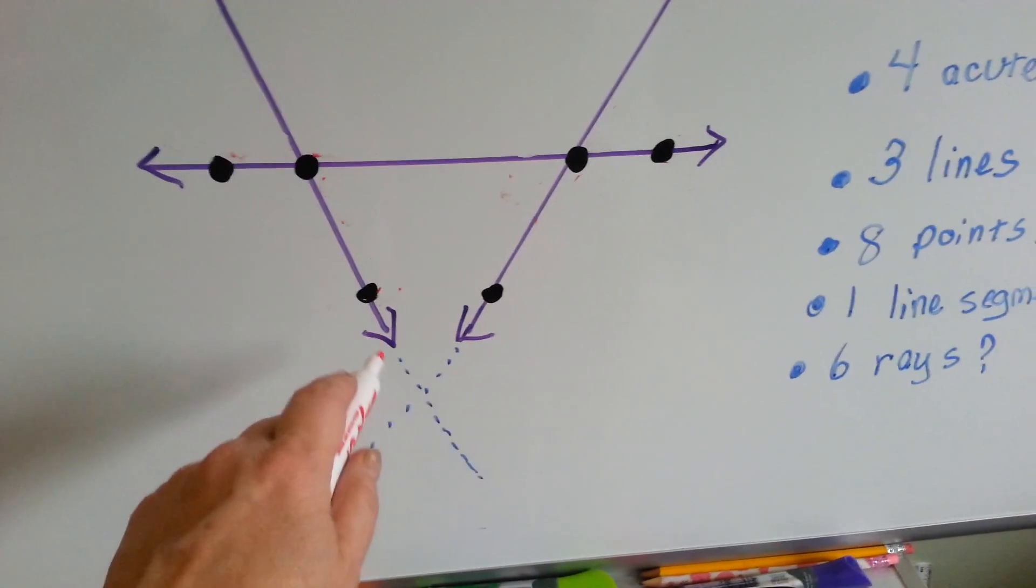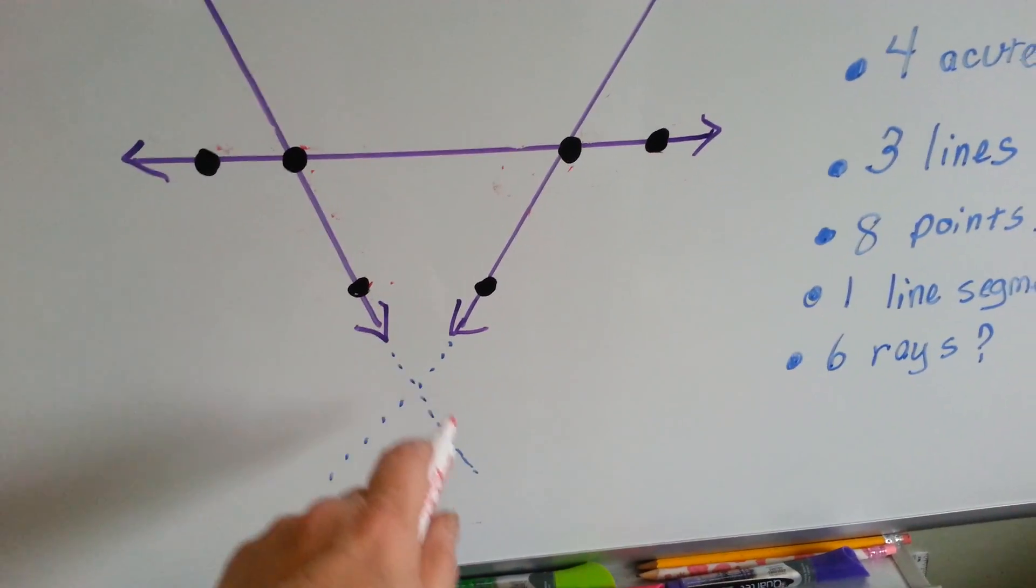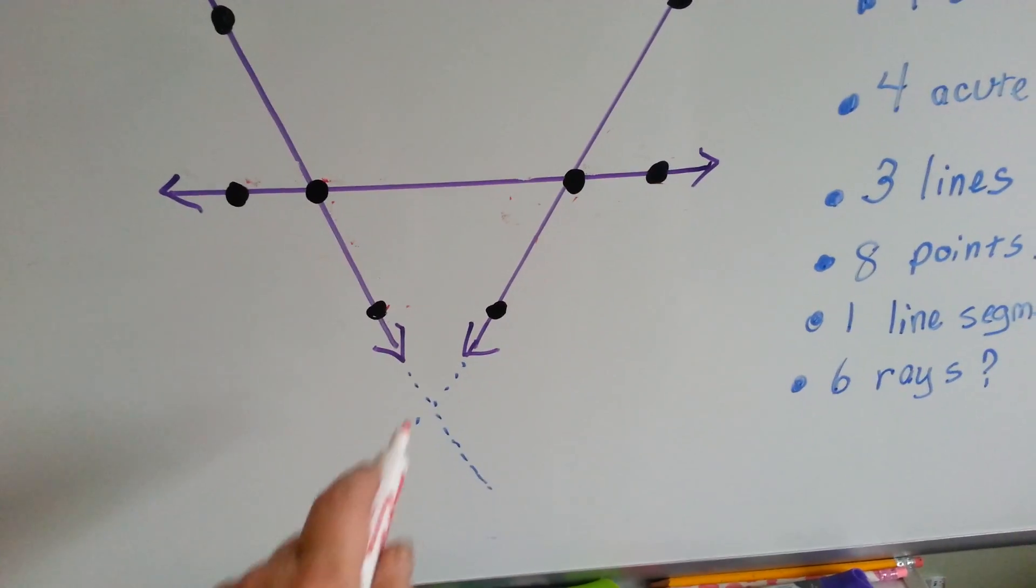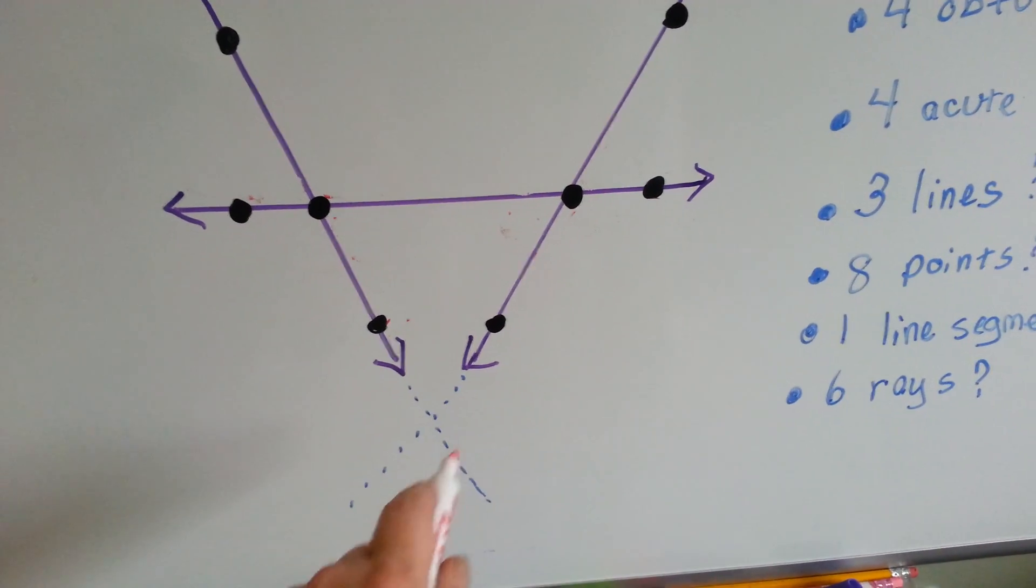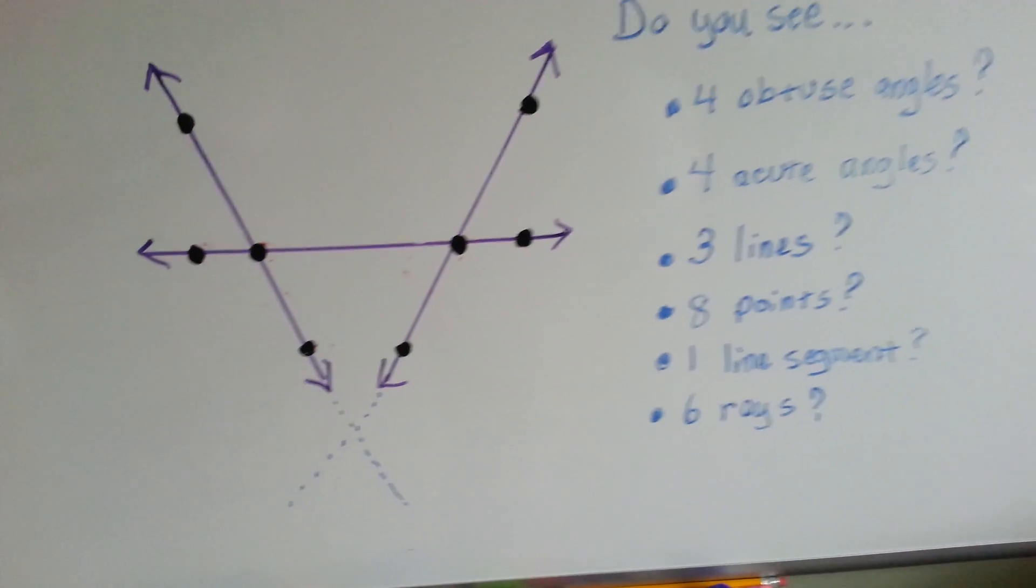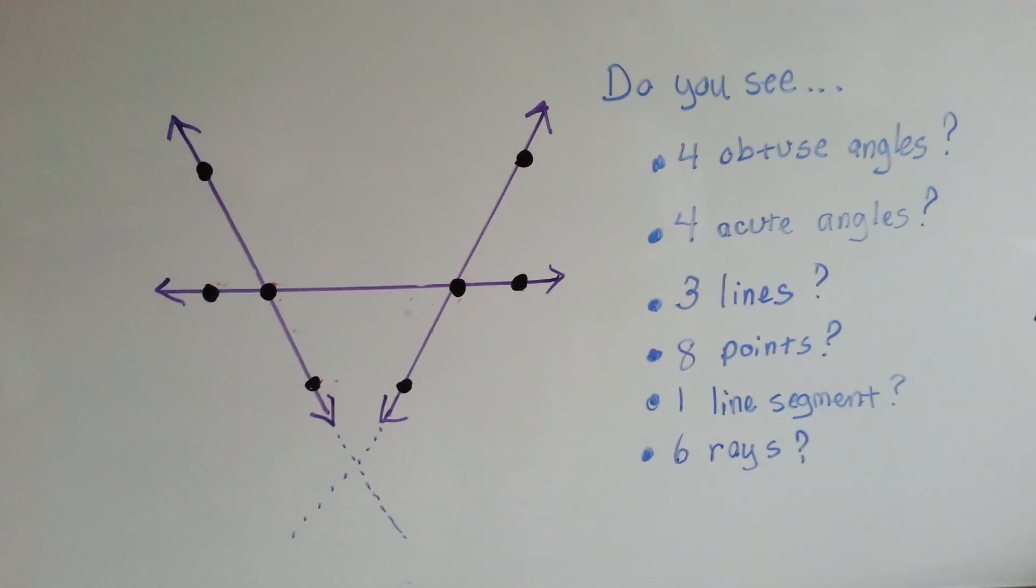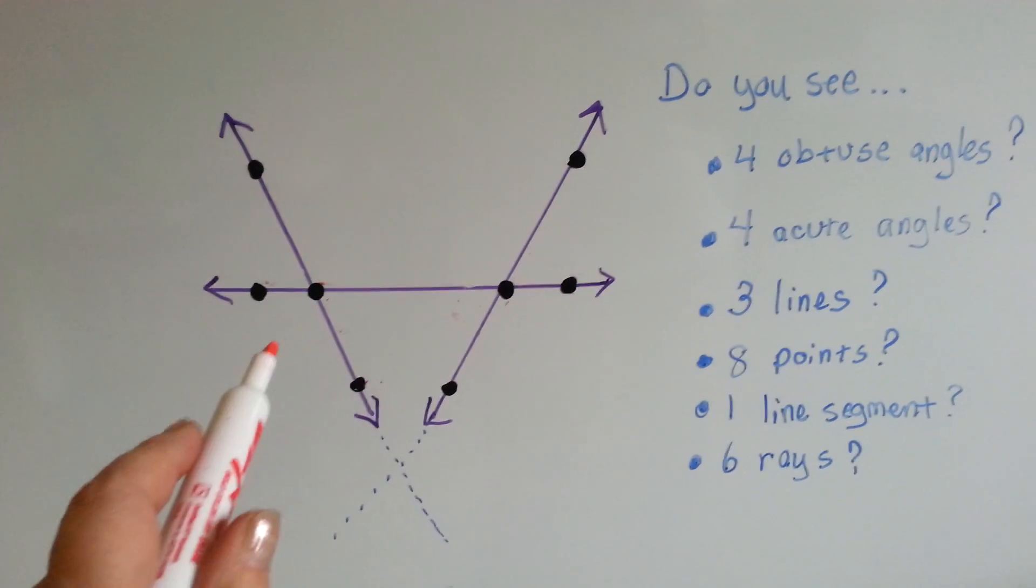See the little dotted lines here? Because lines go on forever, what if they did continue going in this direction? Do you see how they would eventually cross and create four more angles? Yeah. Do you see eight points? Yeah. All the black dots are points.